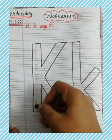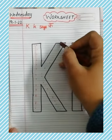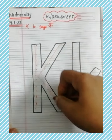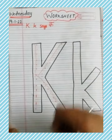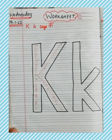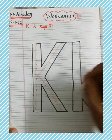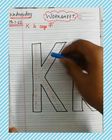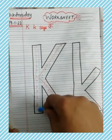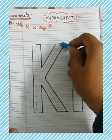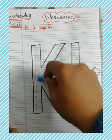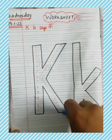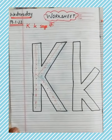Standing line, make a slant line and down slant line. Repeat again: standing line, make a slant line and again down slant line.